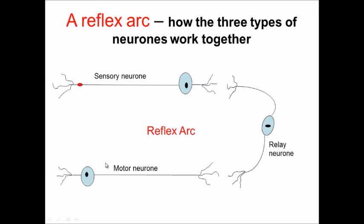The temperature receptors in your hand would then generate an impulse in the sensory neuron and that would send that impulse along the sensory neuron through the cell body and along the dendrites.